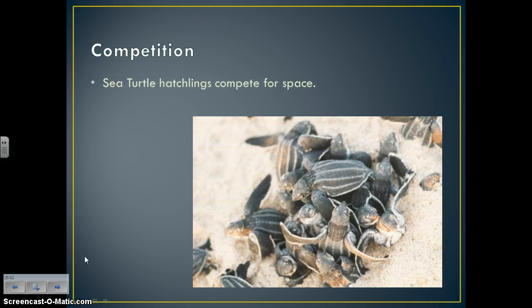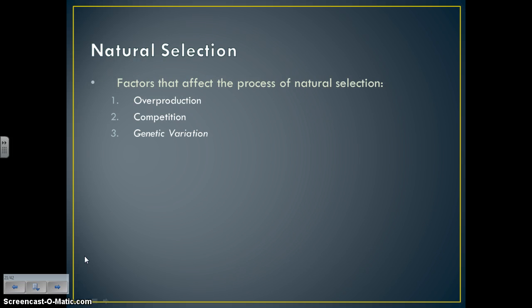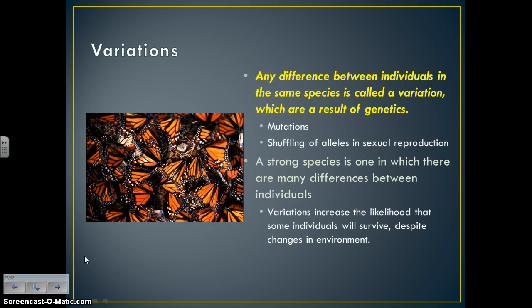Moving on to genetic variation — the key to evolution. Genetic variation is any difference between individuals of the same species that is a result of genetics, not the environment. It can be caused by two things: mutations, which are changes in a genetic sequence, or the shuffling of alleles during sexual reproduction.